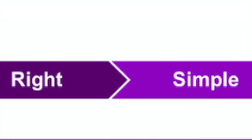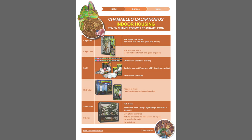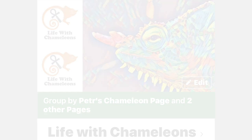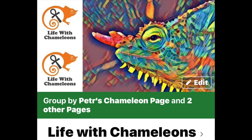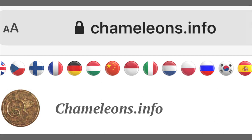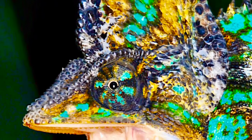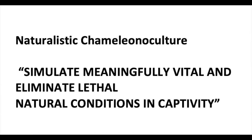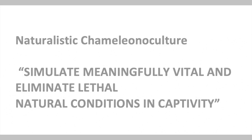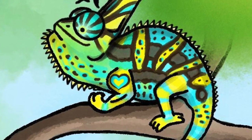The right, simple, safe care sheets for the Yemen chameleon have been distributed and are available around the globe in 19 languages, always available in all groups of the Life with Chameleon Association and on the language-specific pages of chameleons.info. They represent the average proper care for the species. And if we go for the naturalistic chameleon culture, where the main principle is to simulate meaningfully vital and eliminate lethal natural conditions in captivity, we need to consider that average never happens.